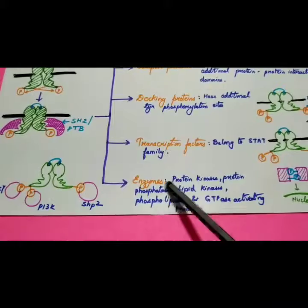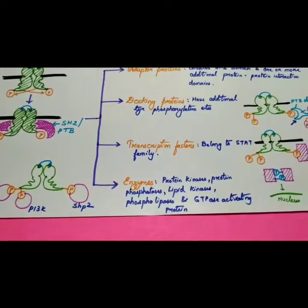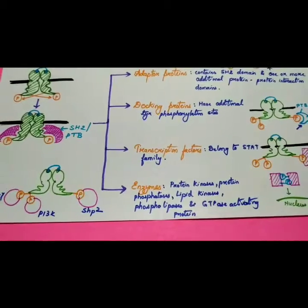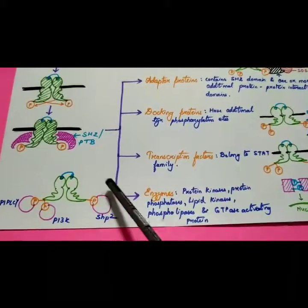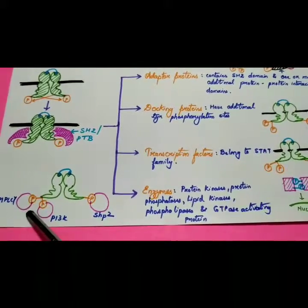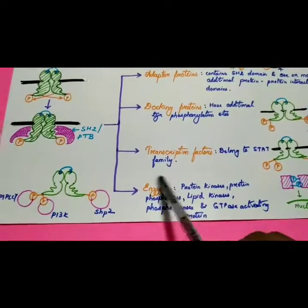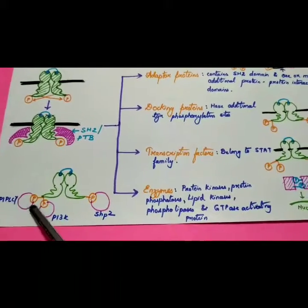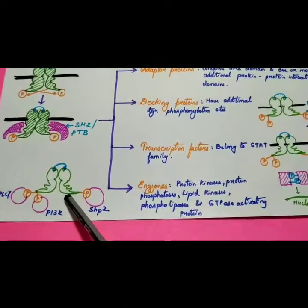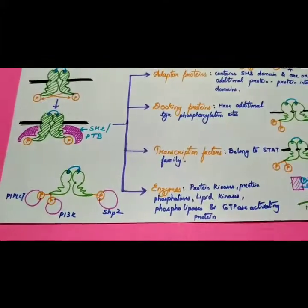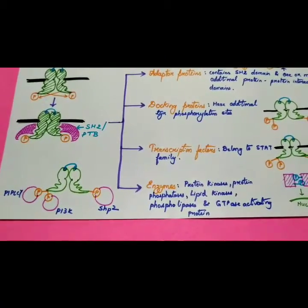Fourth is enzymes. Enzymes including protein kinases, protein phosphatases, lipid kinases, phospholipases, and GTPase activity proteins all bind to the phosphorylated tyrosine. These enzyme proteins bind to the phosphate group attached to the tyrosine residue. This describes the overall pathway of how the protein tyrosine kinase receptor works.